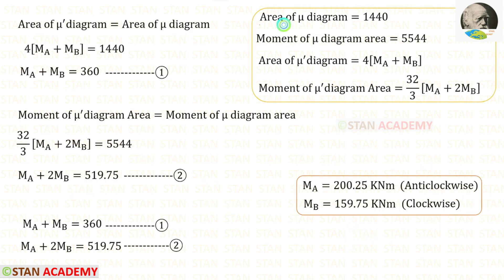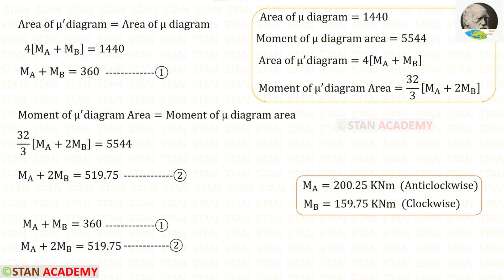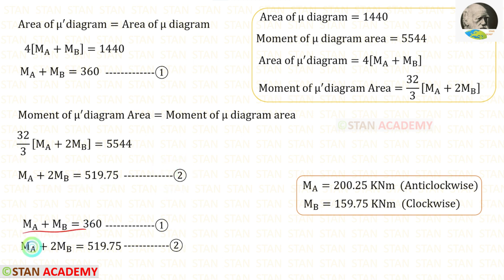Now let us equate the area of the Mu diagram and the area of the Mu-dash diagram to get Equation 1. Then equate the moment of the Mu diagram area and the moment of the Mu-dash diagram area to get Equation 2. We now have two equations. Solving them using a calculator, for MA we get 200.25 and for MB we get 159.75.